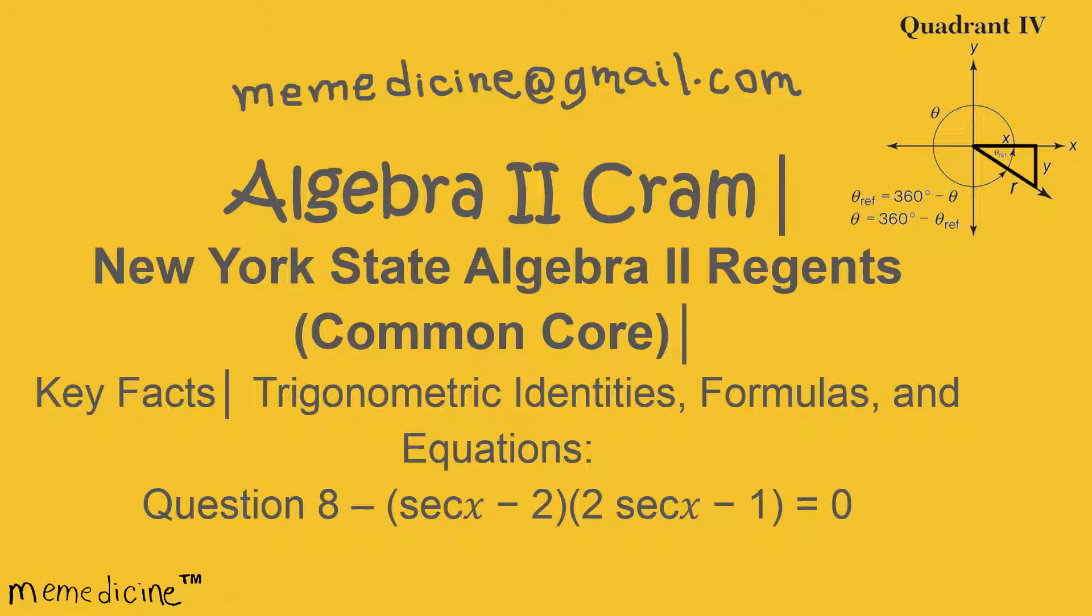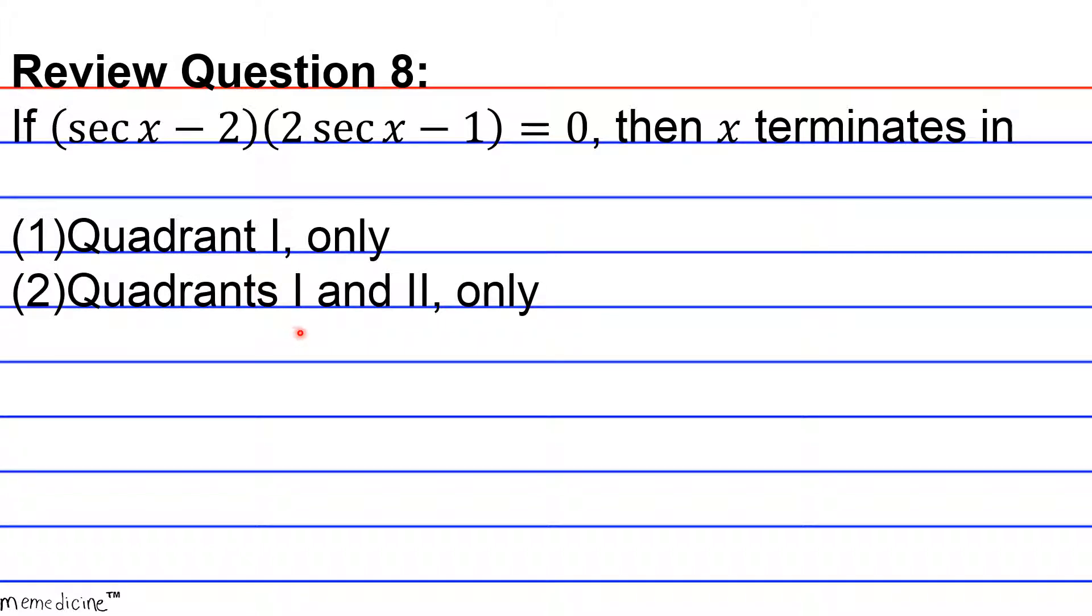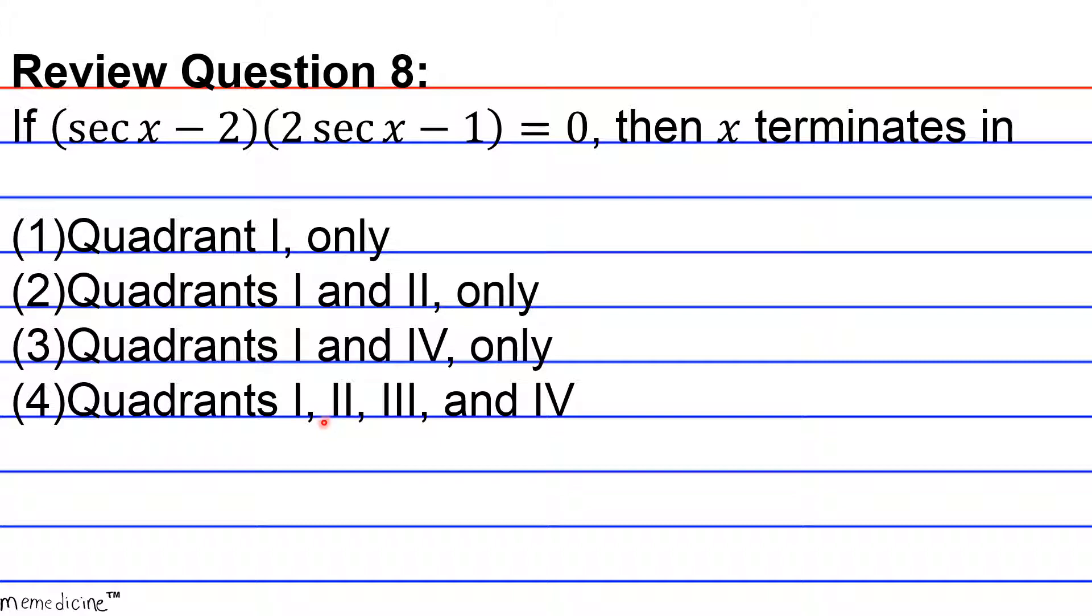All right, let's delve in. Review Question 8: If the secant of x minus 2 times 2 the secant of x minus 1 equals 0, then x terminates in: 1) quadrant 1 only, 2) quadrants 1 and 2 only, 3) quadrants 1 and 4 only, or 4) quadrants 1, 2, 3, and 4. Press pause and I'll give you a moment to strategize and formulate your solution.